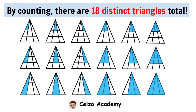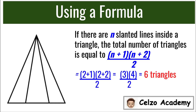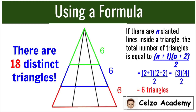Counting is a common method to address this problem, but it is not the most efficient way. Now let's use the formula. If there are n slanted lines inside a triangle, the total number of triangles is equal to (n + 1)(n + 2) / 2. For this problem, n equals 2 since there are two slanted lines. Substituting: (2 + 1)(2 + 2) / 2 = 3 × 4 / 2 = 6 triangles. So there are 6 in the large, 6 in the medium, and 6 in the small — giving 18 distinct triangles using the formula.